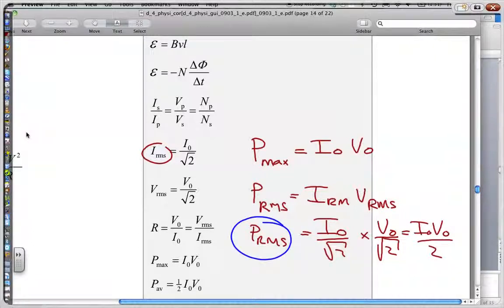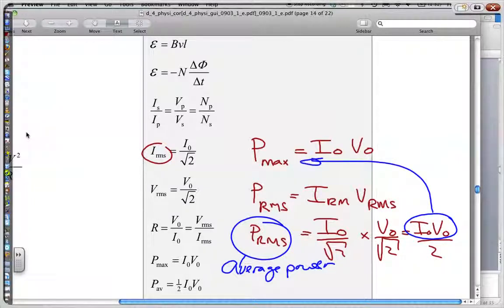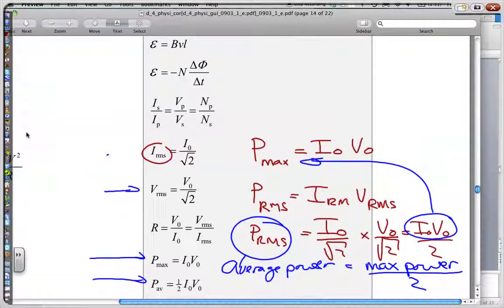So your root mean squared or your average power equals this over here. Now this over here is your maximum power. So basically your average power equals your maximum power divided by 2. So we have these formulas over here. This is where these formulas come from. And we have discussed these.